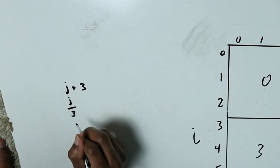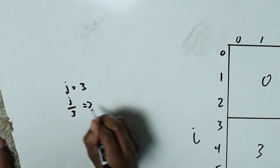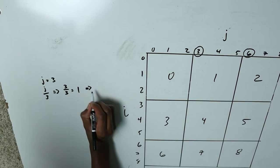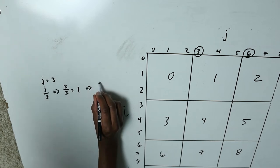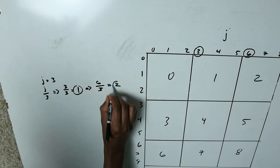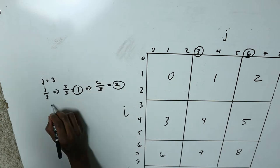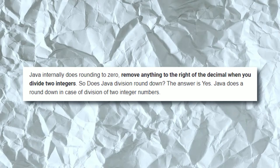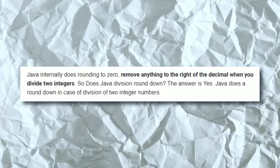If we do j divided by three and j equals six, we'll get two. Because these are integers they round down rather than up — so two divided by three equals zero in code, and five divided by three equals one in code.